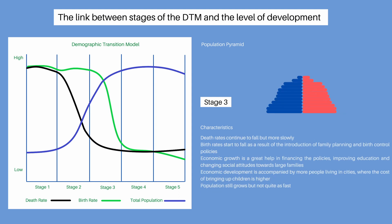In stage 3, death rates continue to fall, but now more slowly. The birth rates start to fall as well, as a result of the introduction of family planning and birth control policies. Economic growth is a great help in financing the policies, improving education and changing social attitudes towards large families. Economic development is accompanied by more people living in cities, where the cost of bringing up children is higher. The expectation of children to carry out work to support the family declines, and they are likely to spend a proportion of their time at school. Population continues to grow, but not quite as fast.